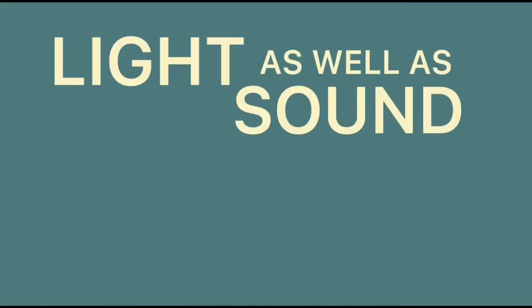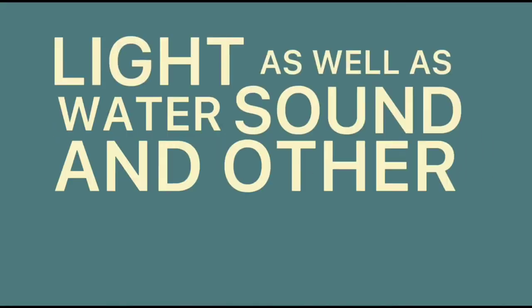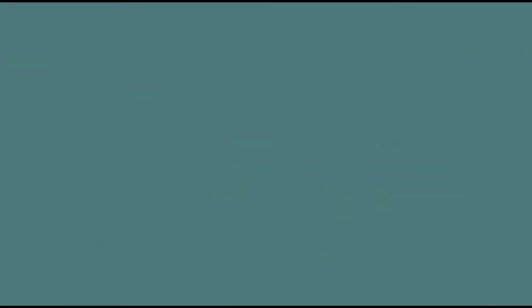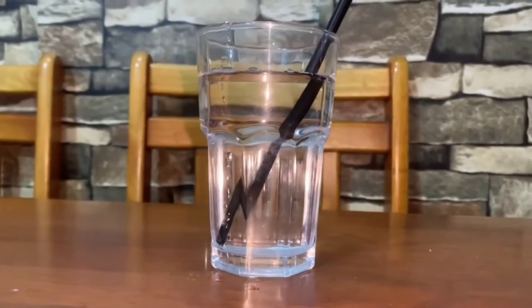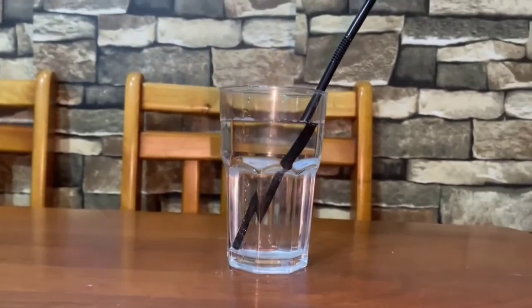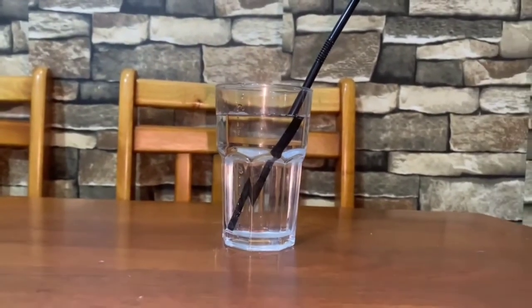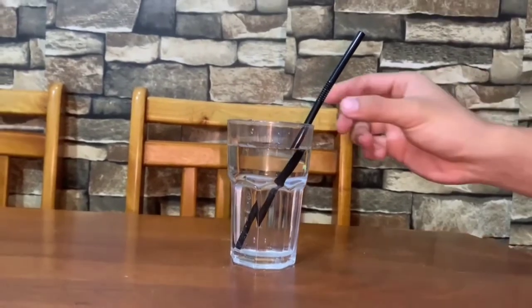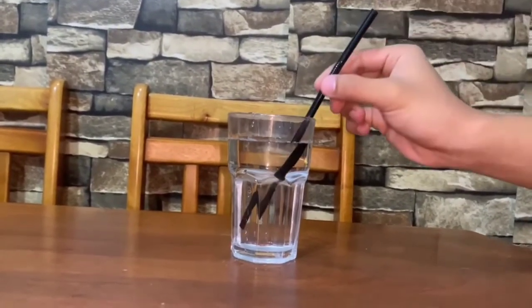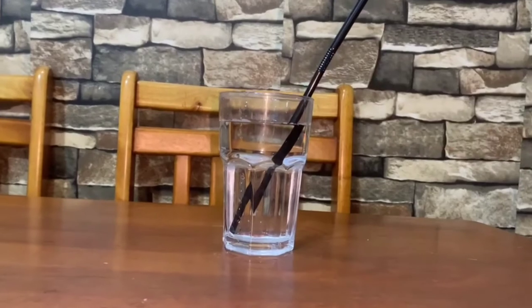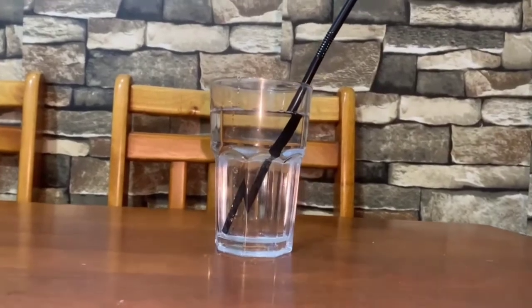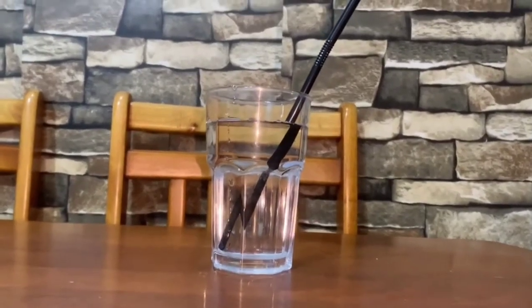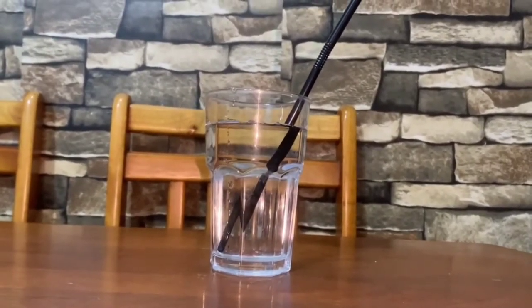Refraction is the bending of light as well as sound, water, and other waves as it passes through a transparent substance into another. This bending by refraction allows us to create lenses, magnifying glasses, prisms, and rainbows. Even our eyes rely on this light bending.